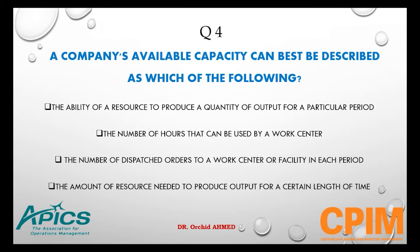Question number 4. A company's available capacity can best be described as which of the following? Options: the ability of a resource to produce a quantity of output for a particular period, the number of hours that can be used by a work center, the number of dispatched orders to a work center or facility in each period, or the amount of resource needed to produce output for a certain length of time.